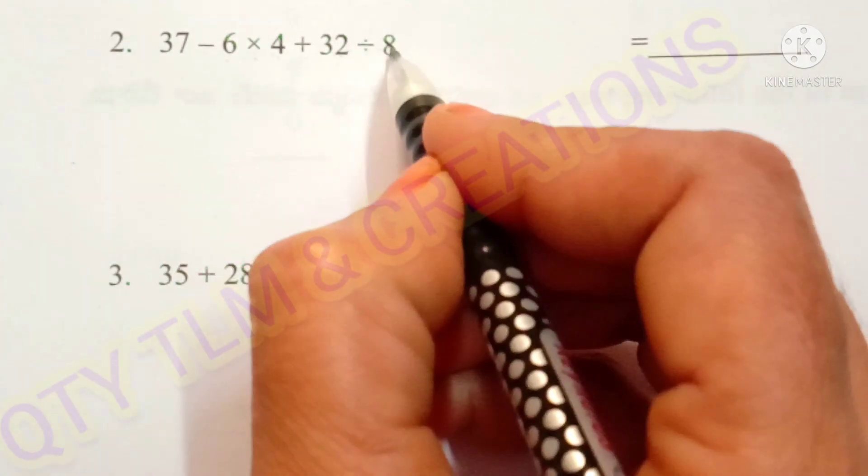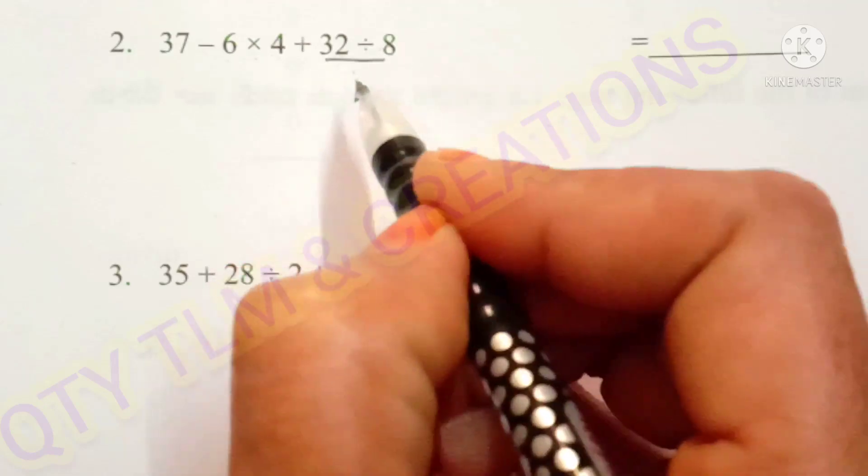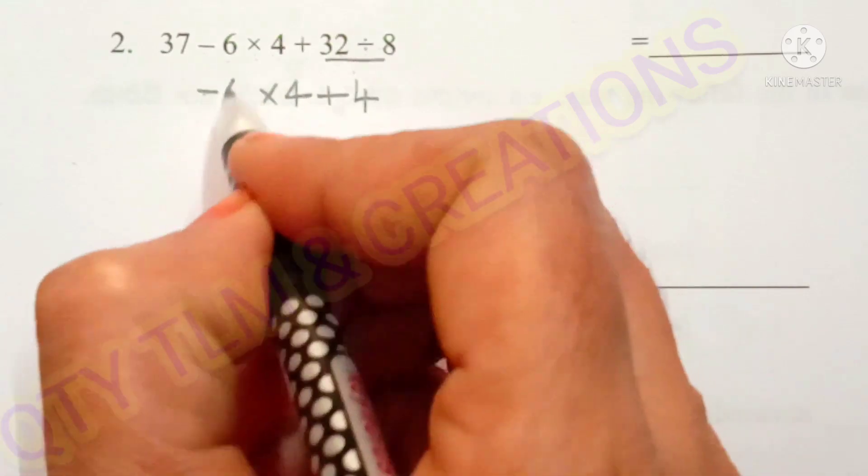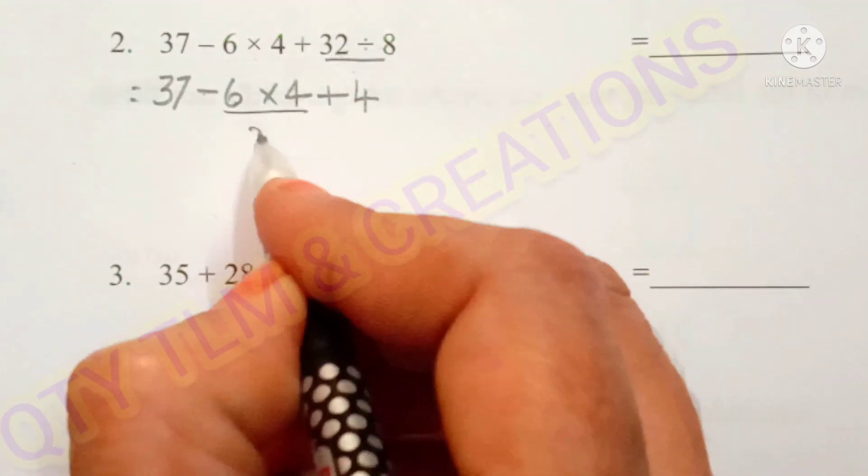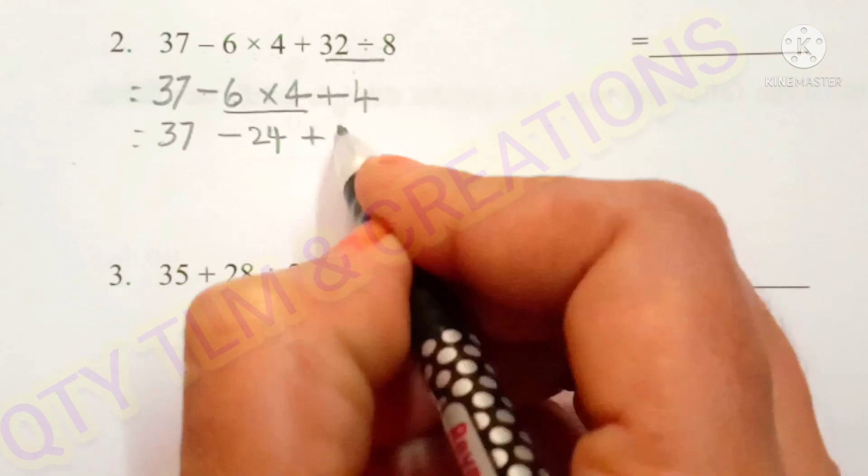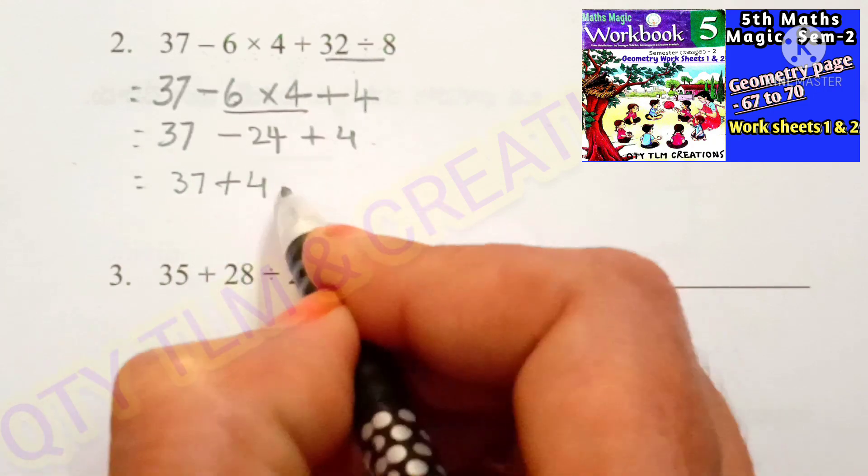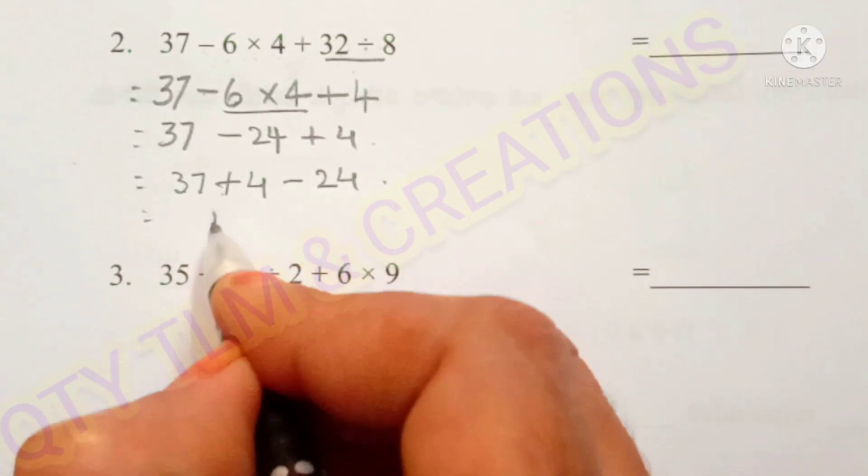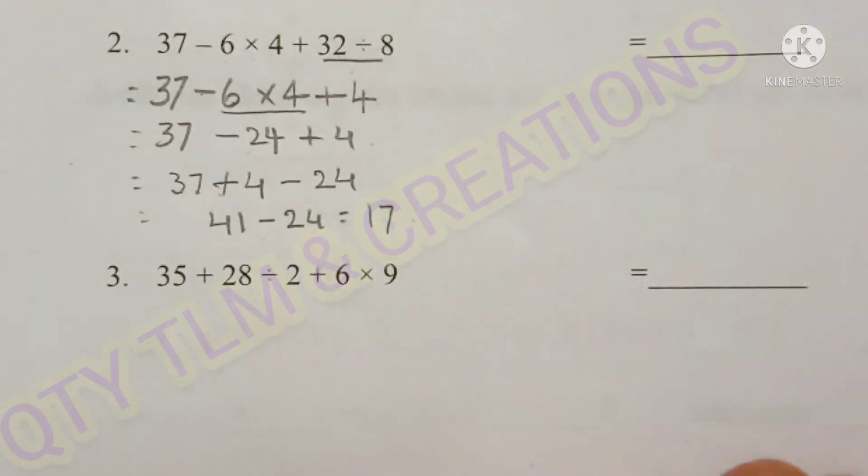We perform the division first. So 32 divided by 8. So 8 divides 32 for 4 times. Next plus 4 into 4 minus 6 and 37. Next operation is multiplication. 6 times 4 is 24 minus 24, 6 times 4 is 24 plus 4. Next operation is addition. 37 plus 4 minus 24. 37 plus 4 is equal to 41 minus 24. That is equal to 17. So the answer is 17.